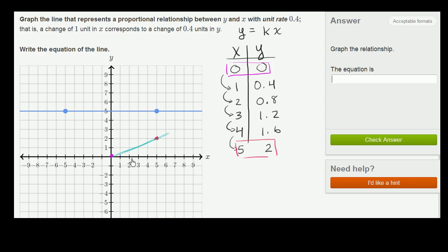Notice the slope of this actual graph. If our change in x is 5, notice here our change in x is 5. When you go from 0 to 5, this change in x is 5. Change in x is equal to 5.